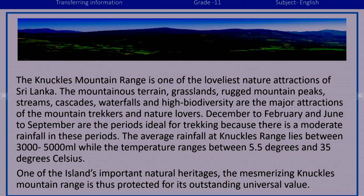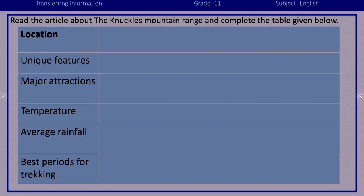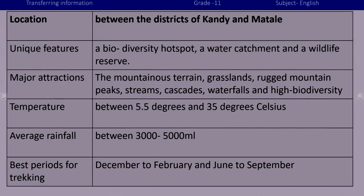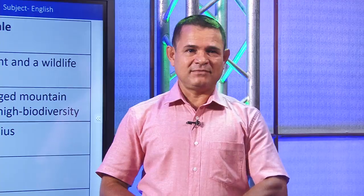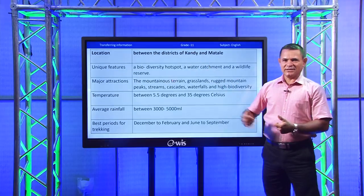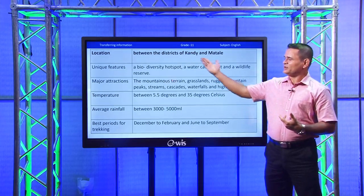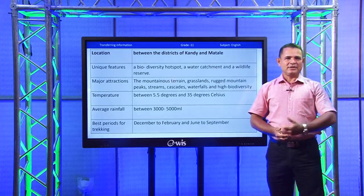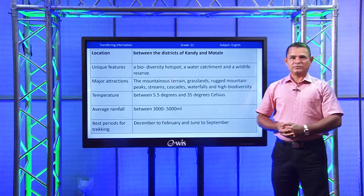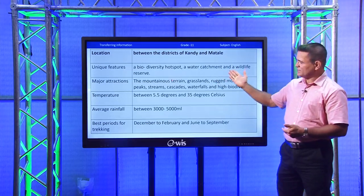It is a huge paragraph — do not worry about that. This kind of paragraph is definitely given in O-level papers. Do not be afraid even though the paragraph is big, because the information that you need is very few. Could you get the answers? Location: between the districts of Kandy and Matale. It is given in a long sentence, but you know the word location means place, so you can easily catch the answer. Hope you could get all these answers correct — just check your answers.